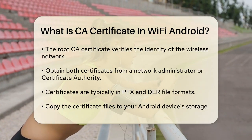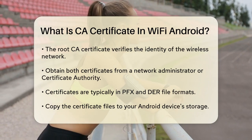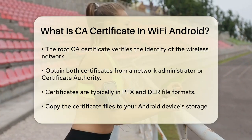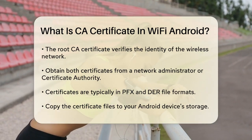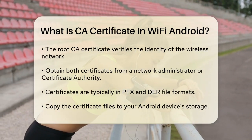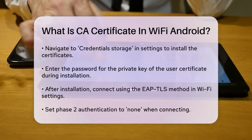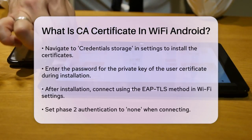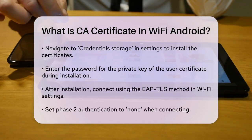Go to your device's Settings, select Credentials Storage, and choose Install from Storage Device. Your device will find the certificate files and prompt you to install them. You'll need to enter the password for the private key of the user certificate and give the certificates a name.